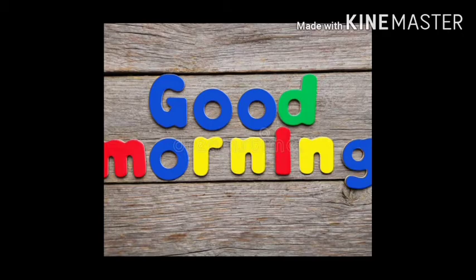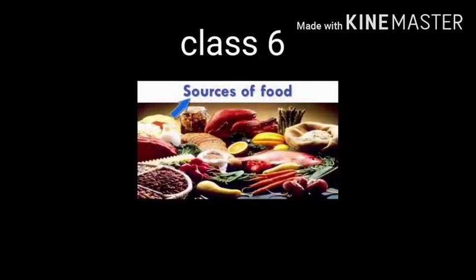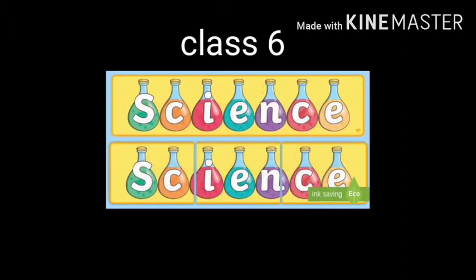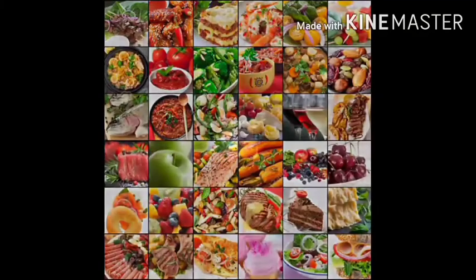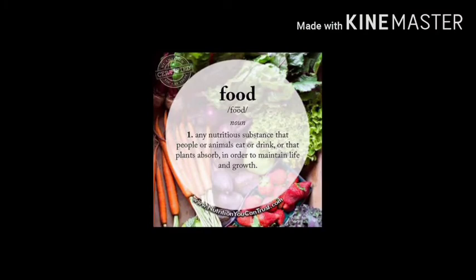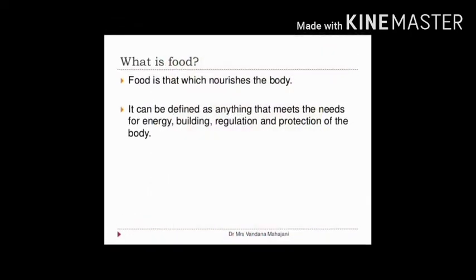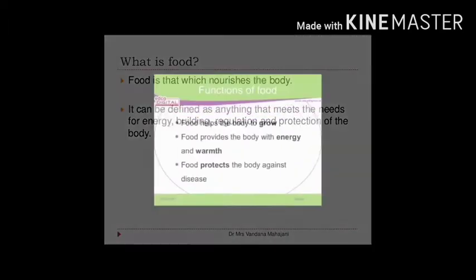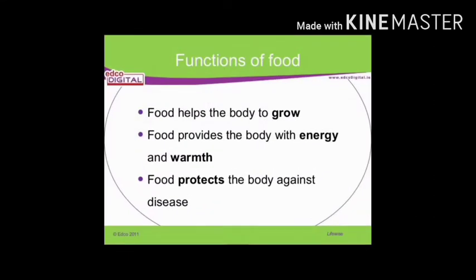Today we will start with Chapter 1 of science: Sources of Food. Food, as we all know, we need food to live and grow. Food is anything that animals eat or absorb in order to maintain life and growth. We get energy from food and it is also required for growth, development, and repair of the body.